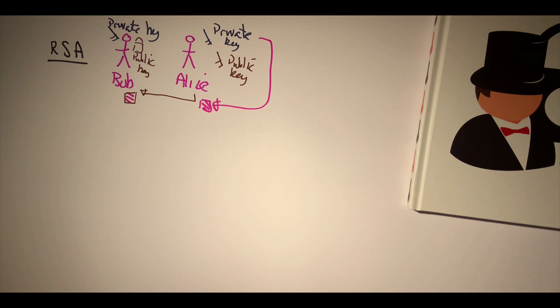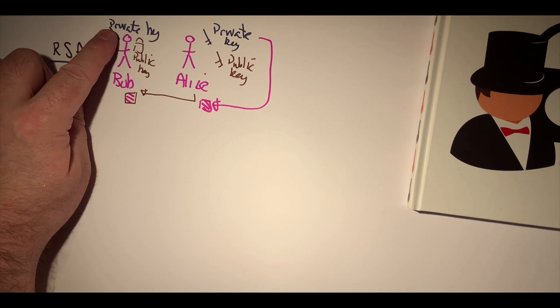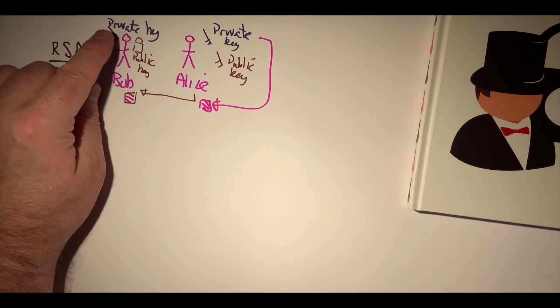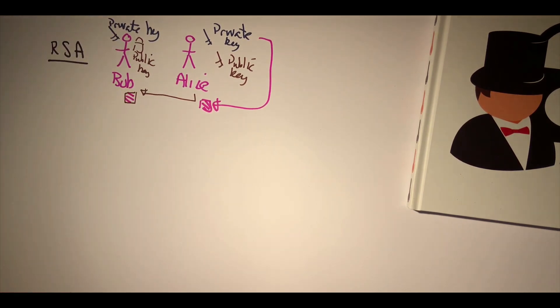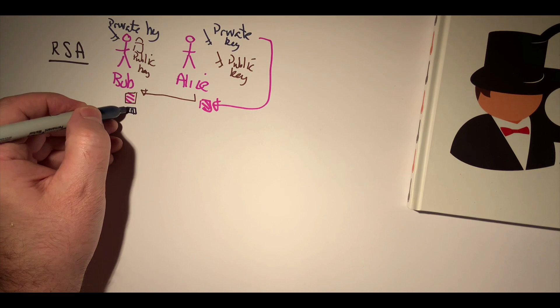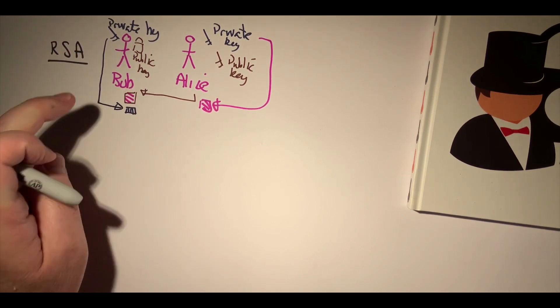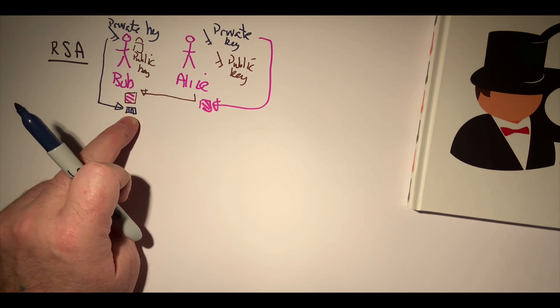Okay, and that's the way that the encryption process works. We can also use RSA to sign for a message. In this case, we might take the message and a hash and then use Bob's private key to sign the hash or encrypt the hash.